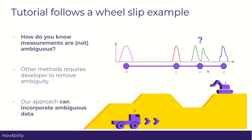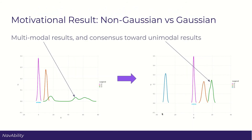One of the key points is: how do you know when your data is ambiguous? Other methods require the developer to remove that ambiguity before it's included in the localization or SLAM system and optimized together. In our approach, all that ambiguous data can be brought together and joint inference solves that problem.